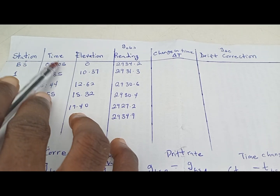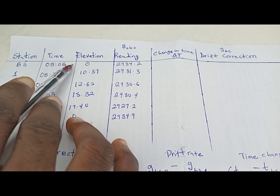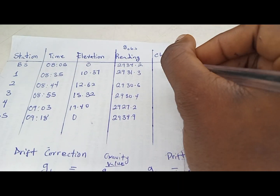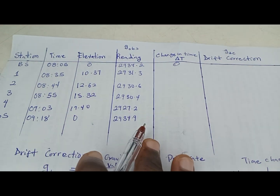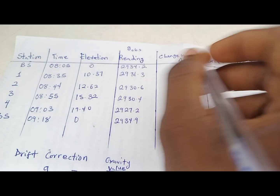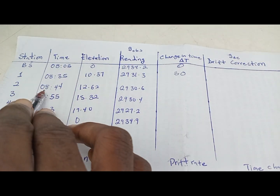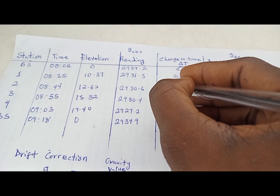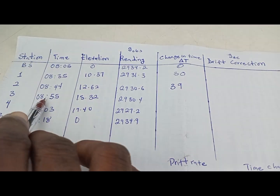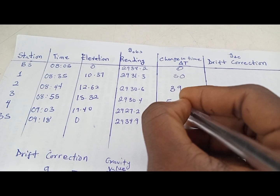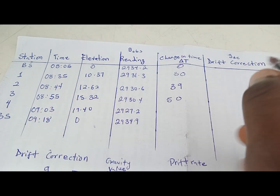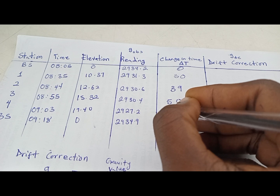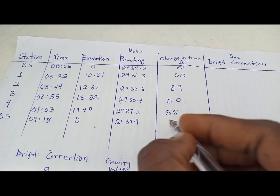So for base station one: 8:05 minus 8:05 equals zero. For station one: 8:35 minus 8:05 gives us 30 minutes. For station two: 8:44 minus 8:05 gives us 39 minutes. For station three: 8:55 minus 8:05 gives us 50 minutes. For station four: 9:03 minus 8:05 gives us 58 minutes. For base station two: 9:18 minus 8:05 gives us 73 minutes. We are subtracting each time from the base station one time.